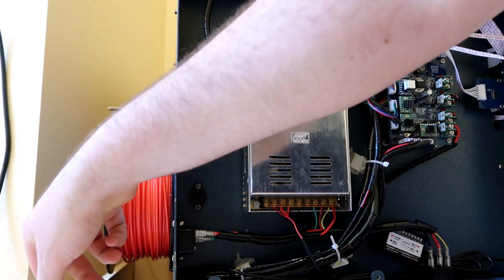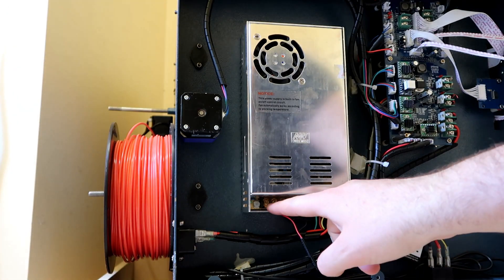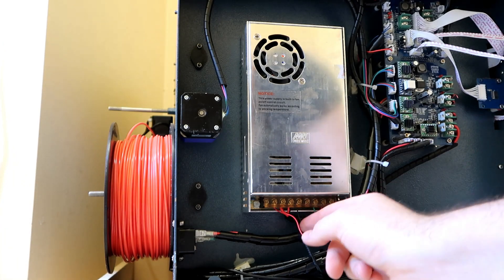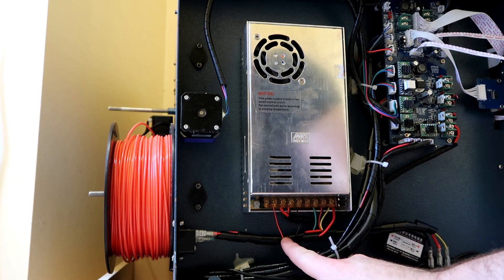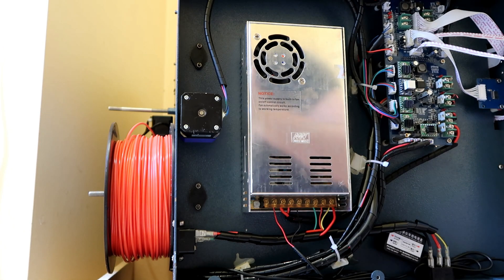The first thing we're going to make sure to do is pull out the power. Now we're going to have to disconnect all the wires that are connected. Make sure to remember and write down where everything goes because you don't want to lose where everything is.